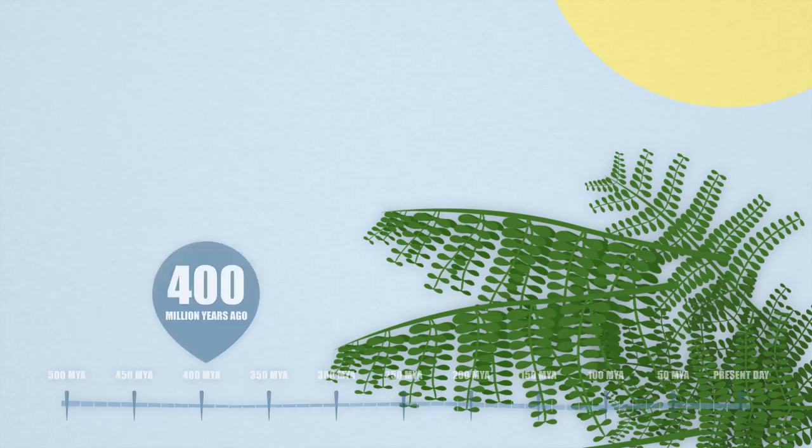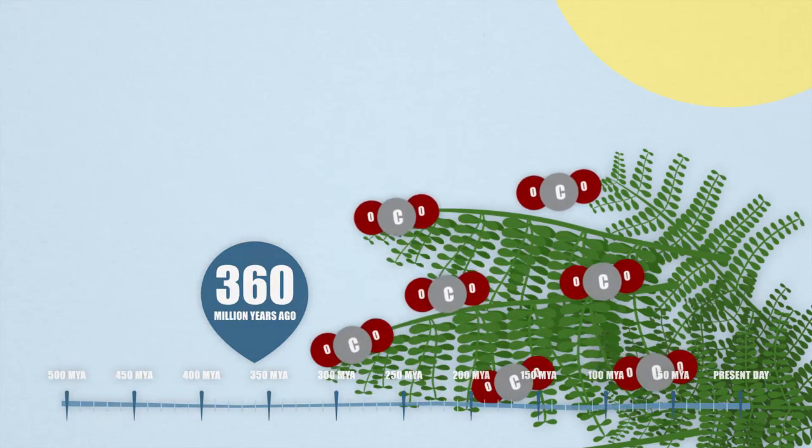But that's not all these early land plants are doing. They're also affecting the climate. Plants take in carbon dioxide from the atmosphere.